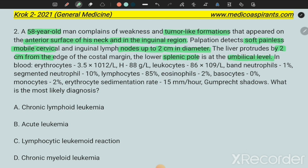Lab values show: RBC, hemoglobin, WBC, band neutrophils, segmented neutrophils, lymphocytes. One more important finding: Gumprecht shadows are positive.